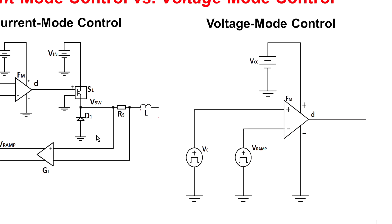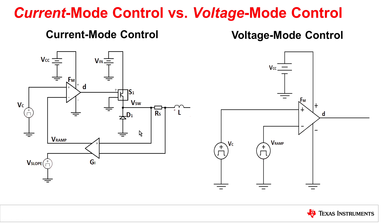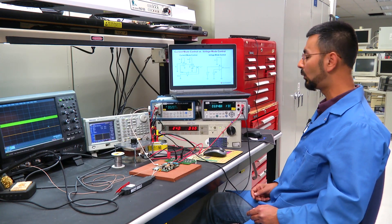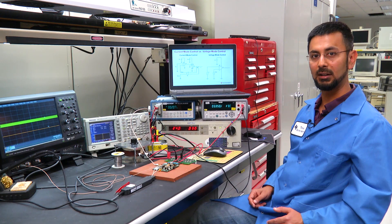Because of the way the current mode control works there are two real poles that need to be compensated, whereas in a voltage mode control there are complex double poles that need to be compensated. This makes the integration of the compensation in a current mode control very easy whereas integration of compensation in a voltage mode control is fairly complicated.